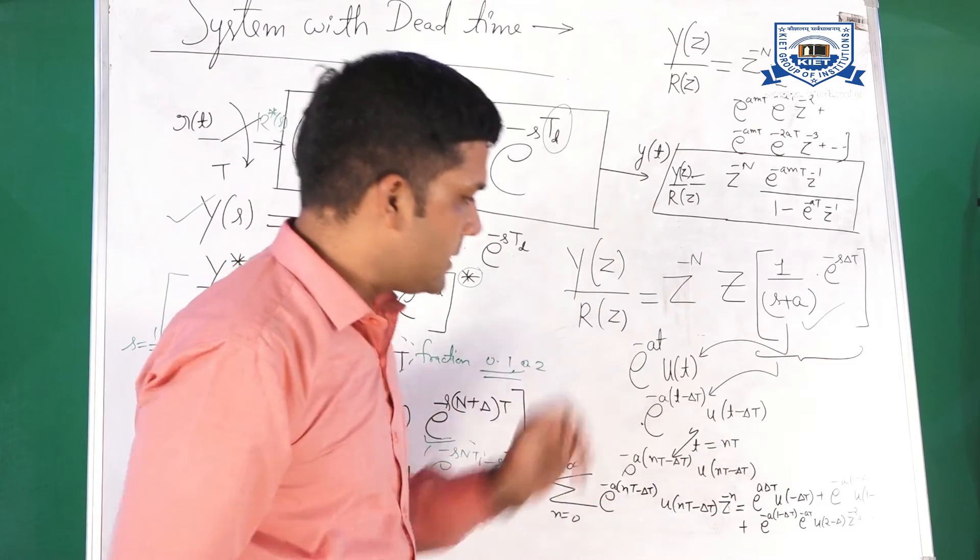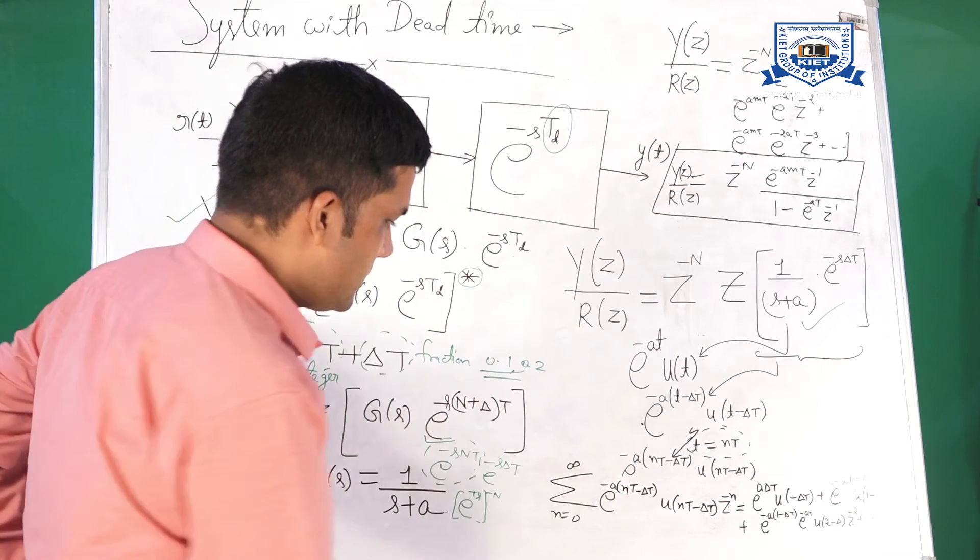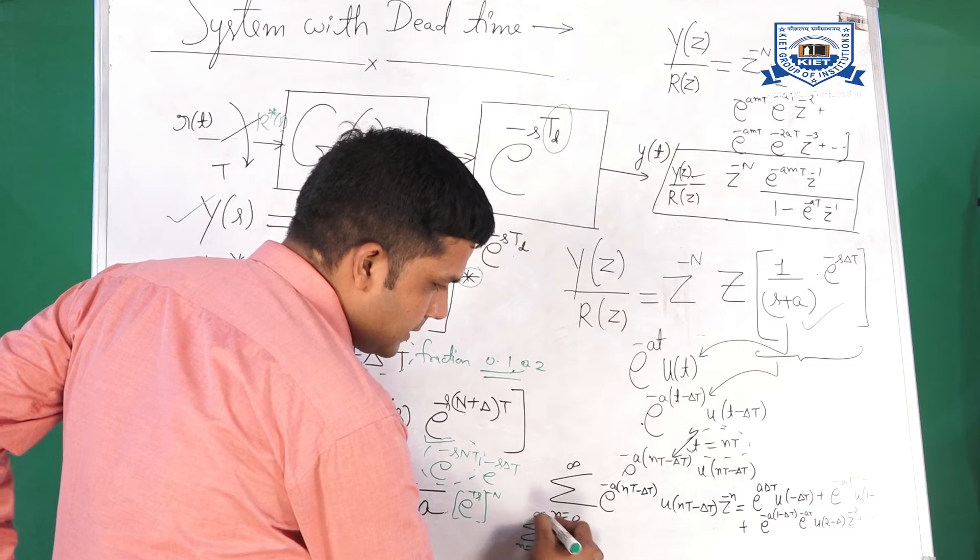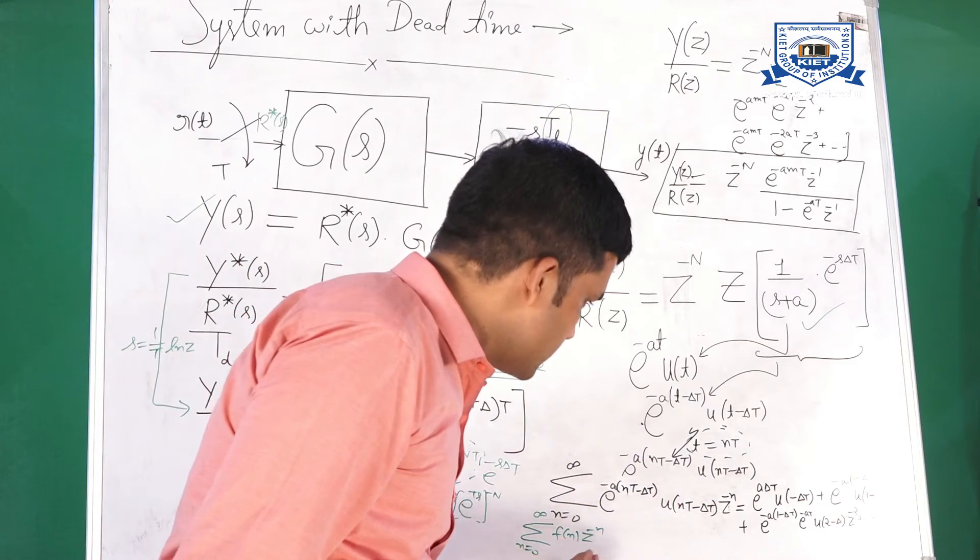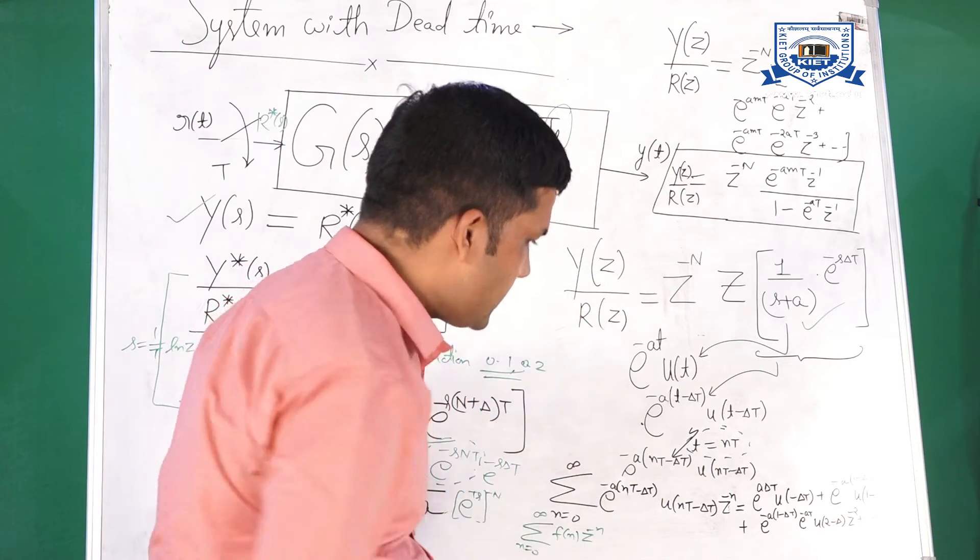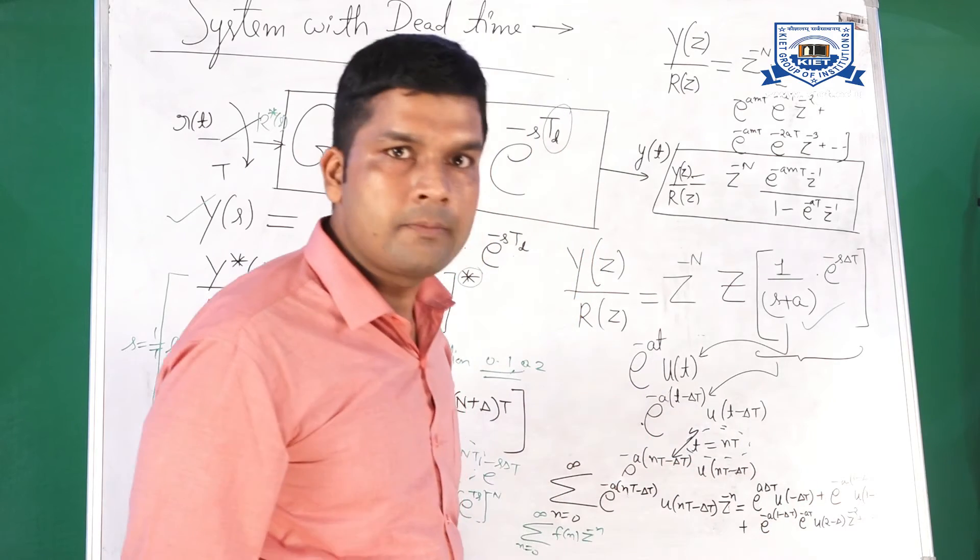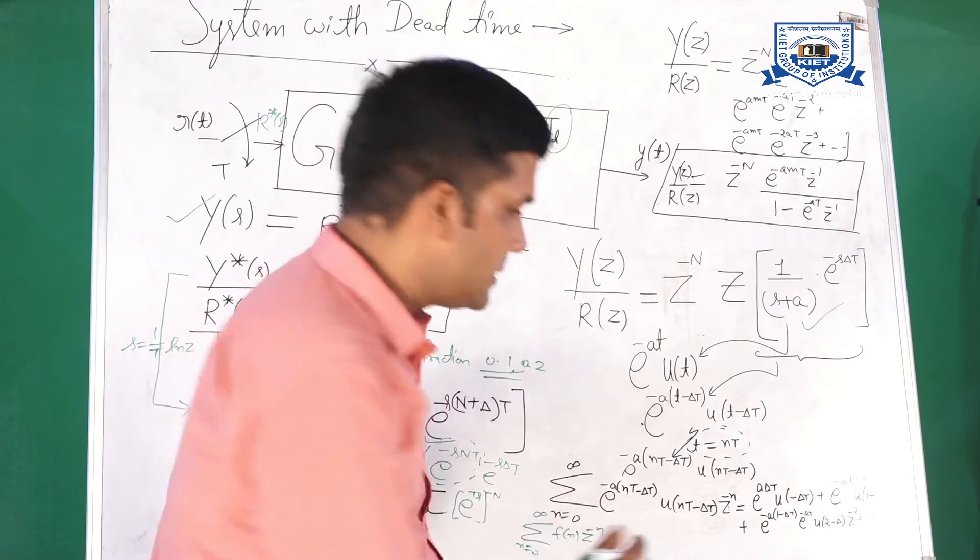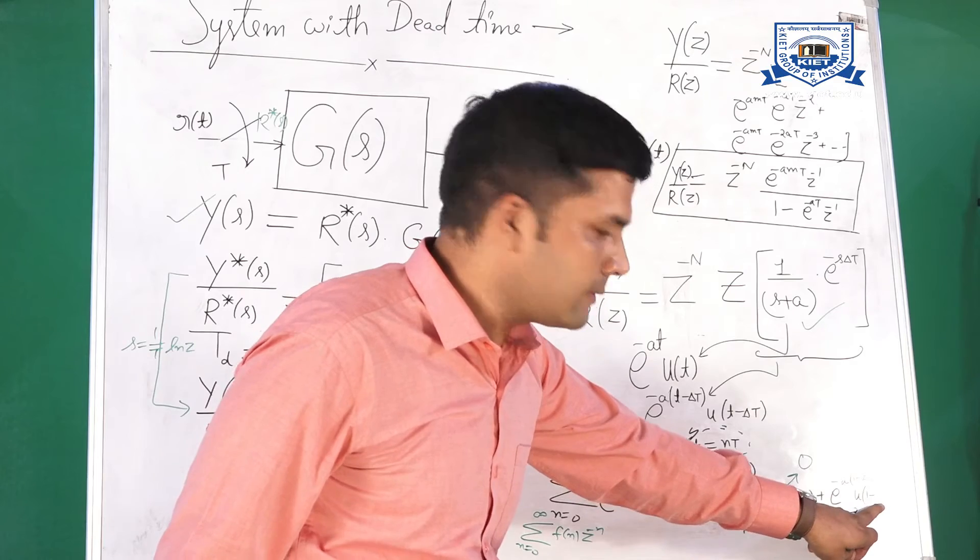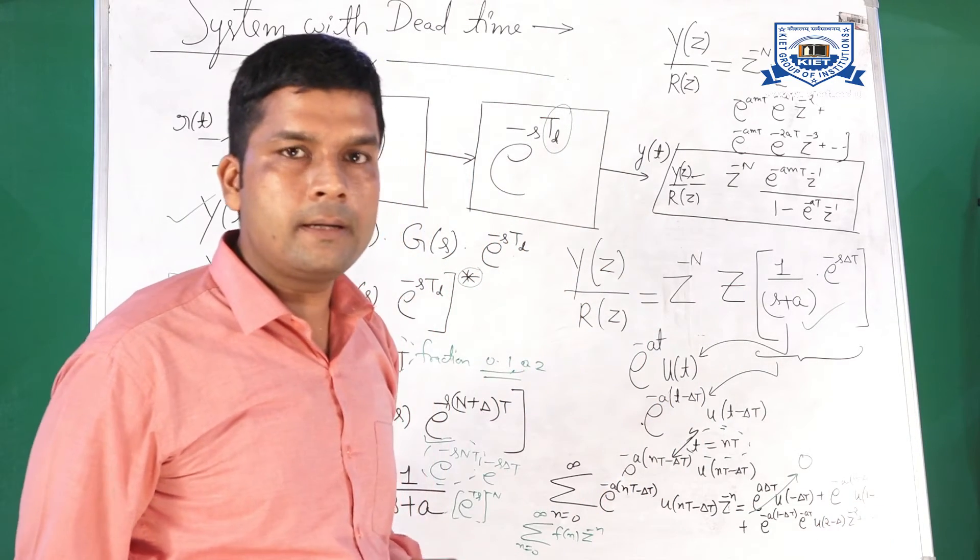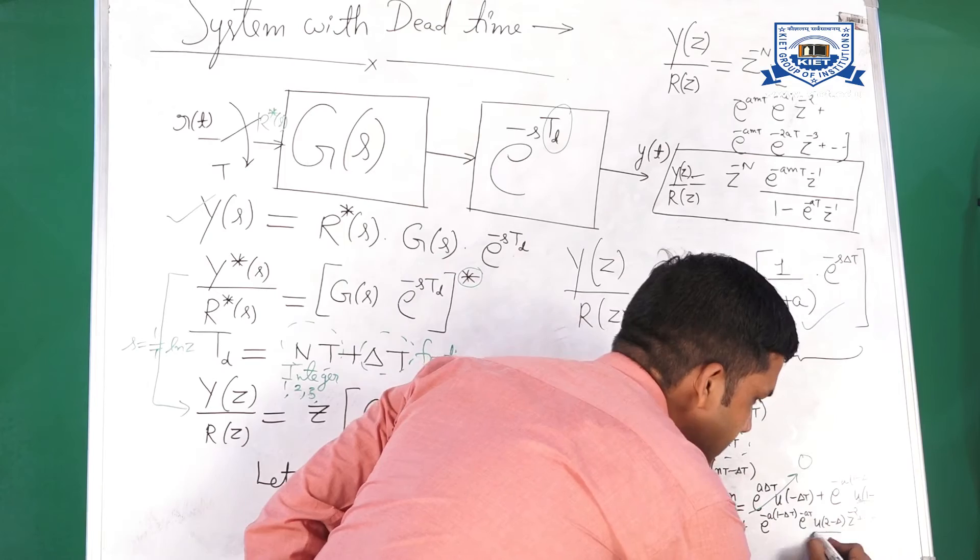After that, put t is equal to nt. Mapping between continuous time into discrete time. Now, formula of Z transform is n is equal to 0 to infinity, fn into z to the power minus n. This is fn, into z to the power minus n. Now, explain the summation. First value is n is equal to 0. U is minus delta. But unit step does not exist for negative values. That's why this value will be 0. Second value will be U positive. U positive means value 1, because step function exists for positive values.